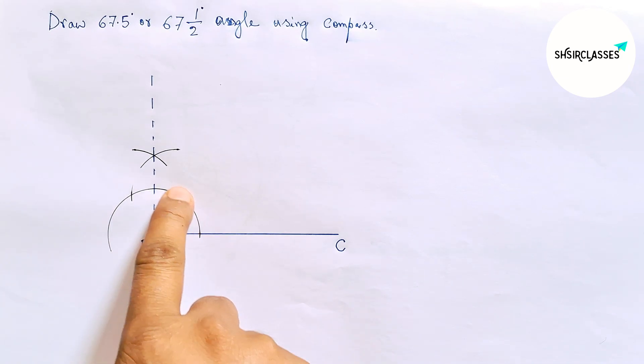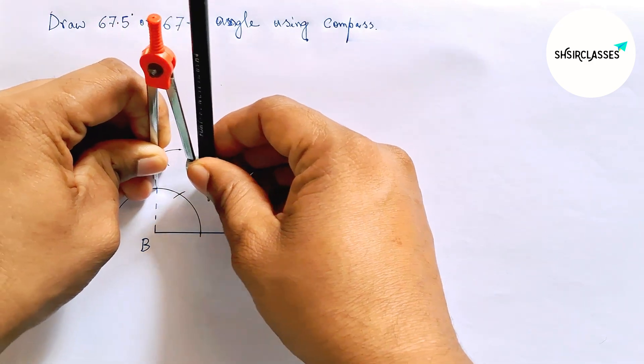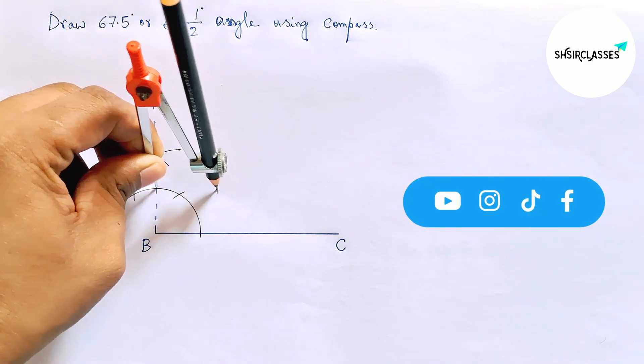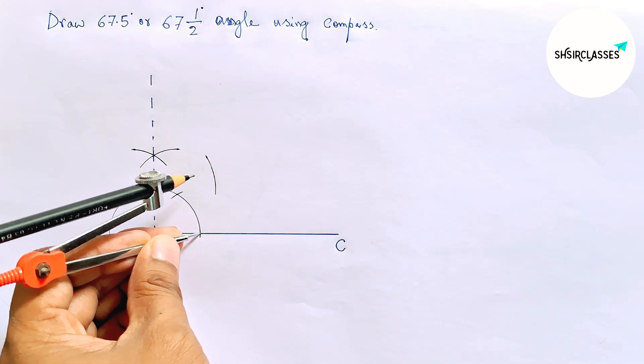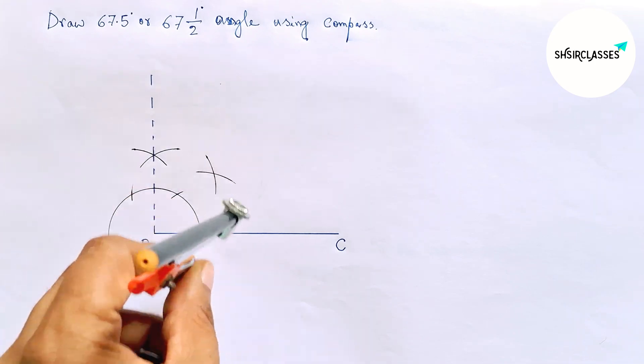Now bisecting this angle. So putting the compass here and taking greater than half of this and drawing an arc here. Now putting the compass here with same length and cut here.